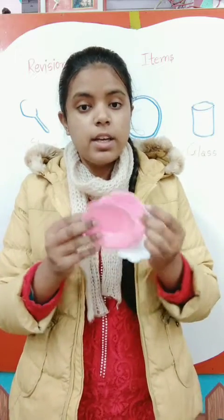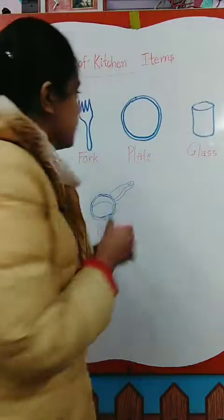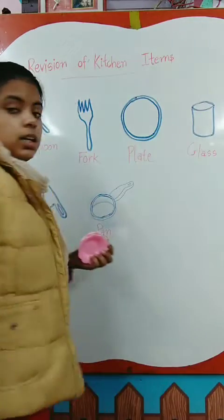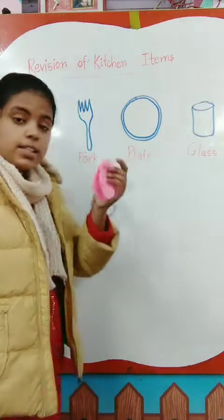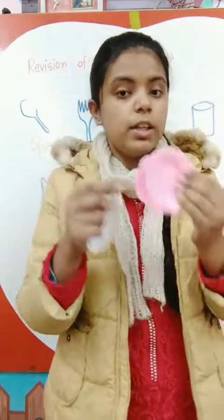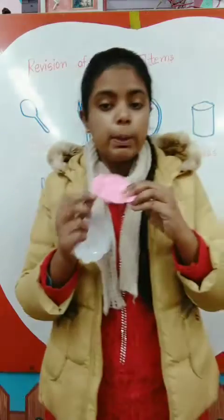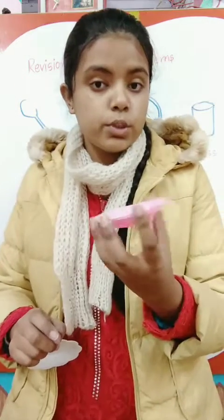And what are these? These are plates. Can you all see plates here? This is a plate and these are also plates. It is white in colour; these are pink in colour. We keep our food in this plate and then we eat it.